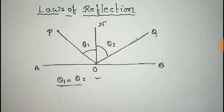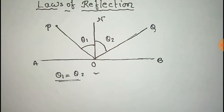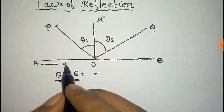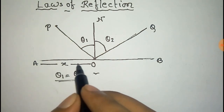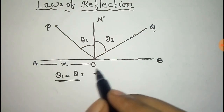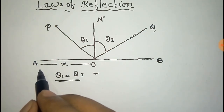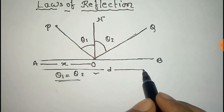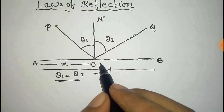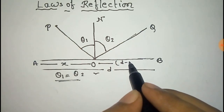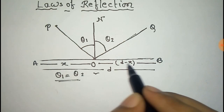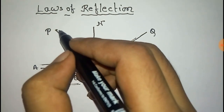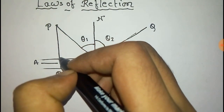We have to prove that theta 1 equals theta 2 to prove the law of reflection. Now take this distance as X, and if the total distance of the surface is D, then this distance OB is D minus X. Now we join these two points.